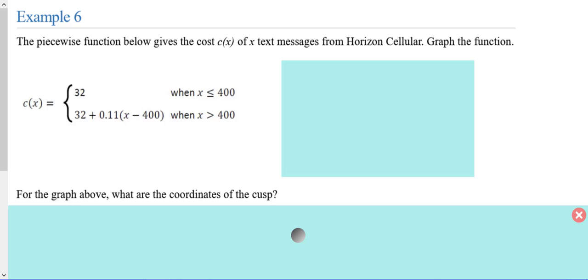The second function adds 11 cents for each text message over 400.